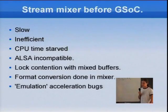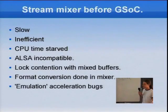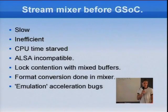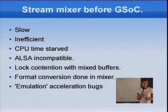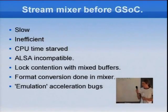What was the Stream Mixer before my Google Summer of Code project? It was basically slow, it took a lot of time, and it still wouldn't work fast. Every time it ran, it needed at least four context switches: one to handle that, one that was separate, one back, one for the timer to run the server, and I think one more for ALSA again.